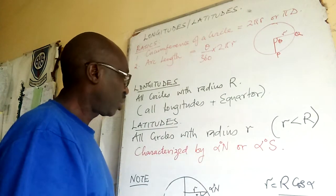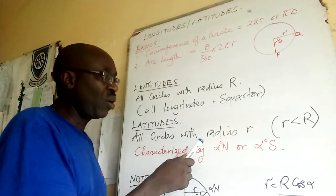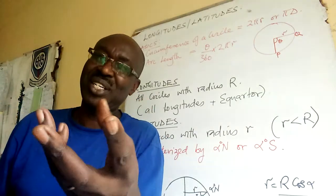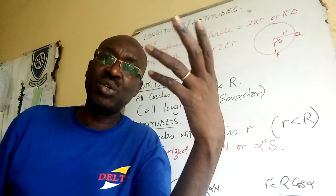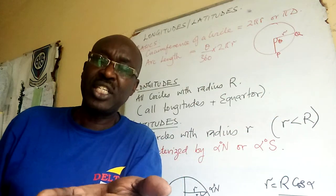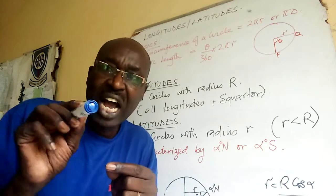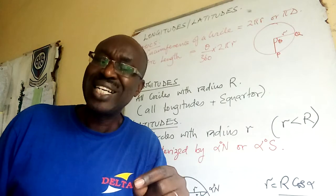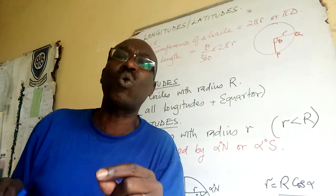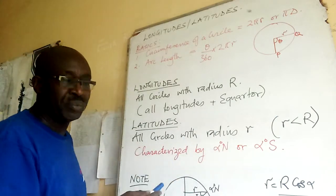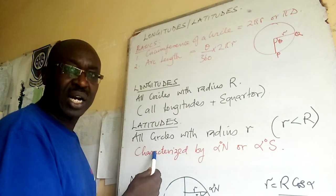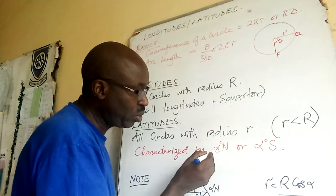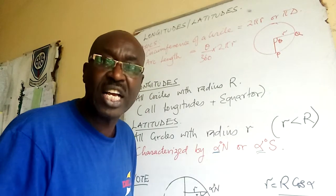Latitudes are all circles with small radius r. How do you identify them? It is very simple — you will be told 30 degrees north, or this circle is 70 degrees south. So whatever angle is attached to either north or south tells you it is a small circle, a latitude. Latitudes are characterized by an angle followed by north or south.